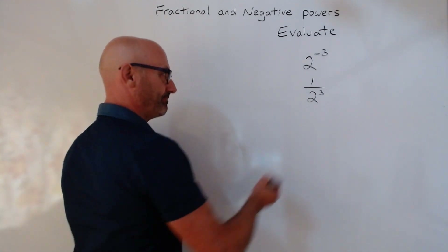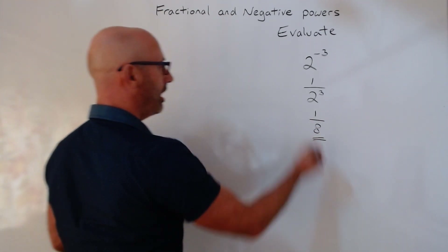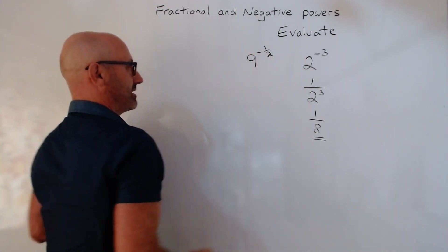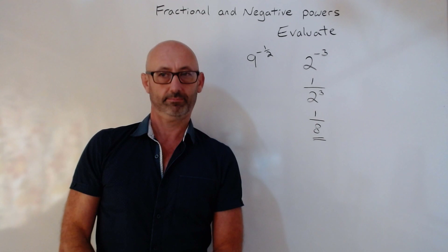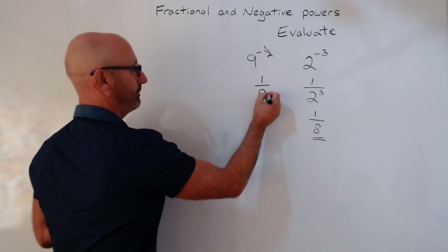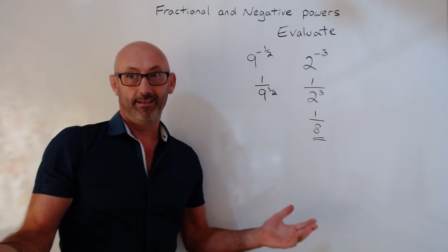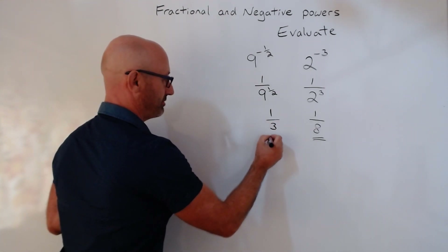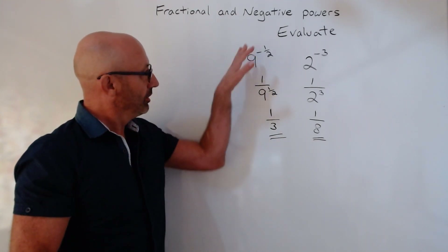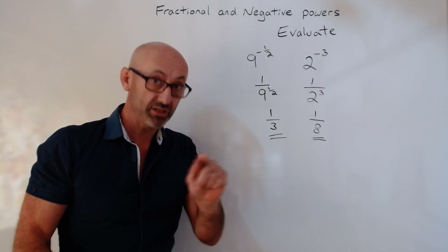What's two to the power of three, Nina? Eight. So two to the minus three is one over eight. Now look at this — nine to the minus half. Tell me where to stick it, Nina. Under the one. Yes, I'm sticking it under the one. And what is nine to the power of a half? Three. So it is one over three — it is a third. All you have to do is stick it under one and then do all the processes we've learnt so far in this video.